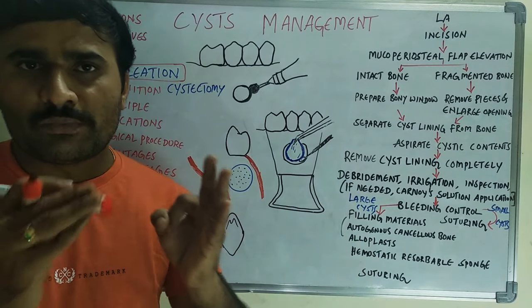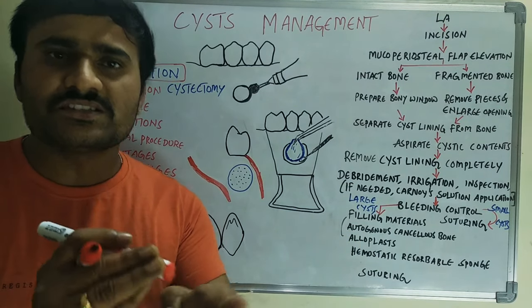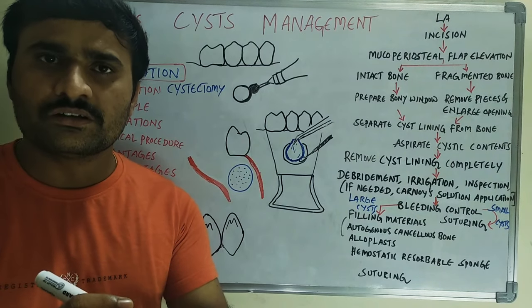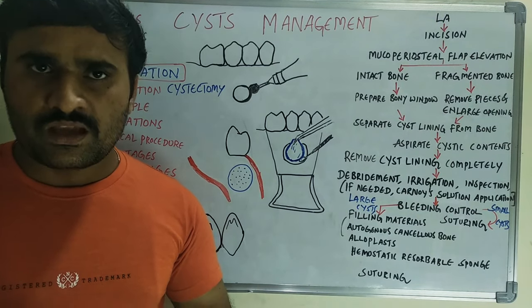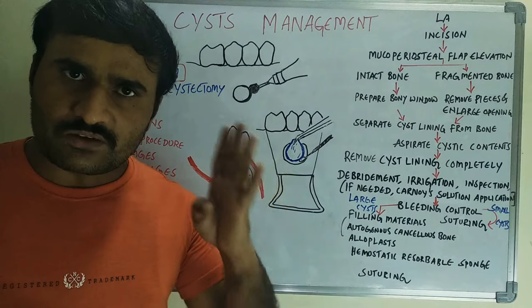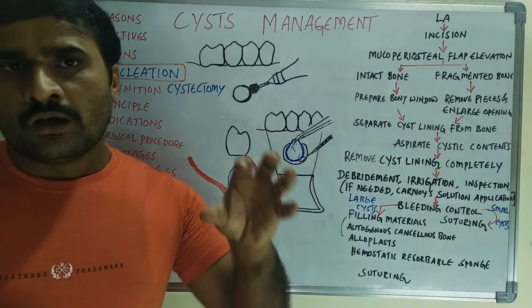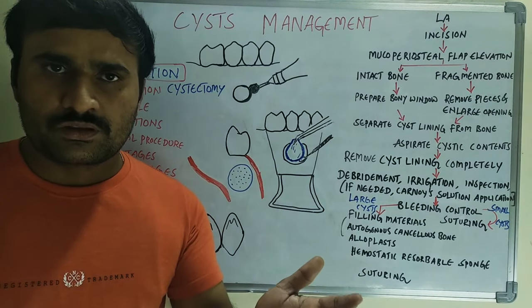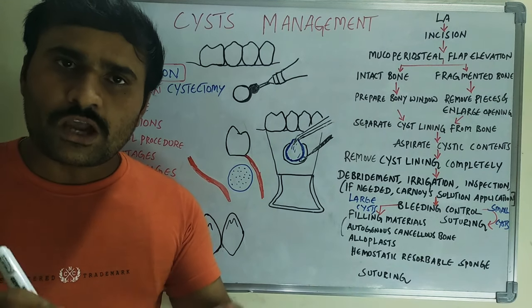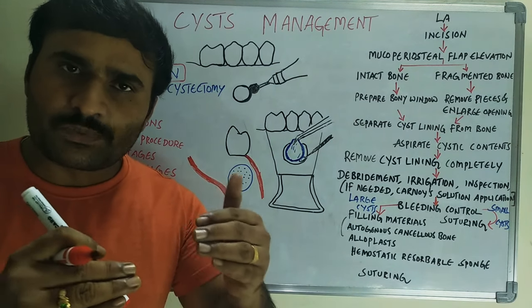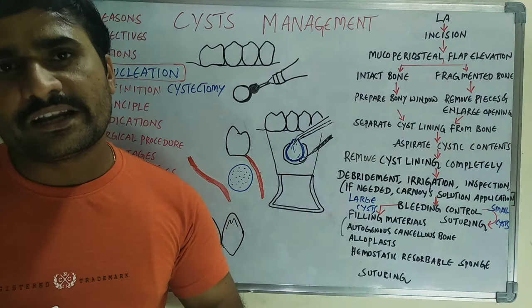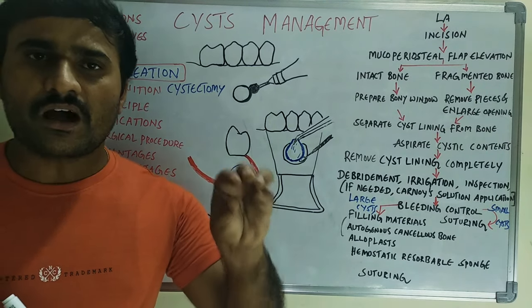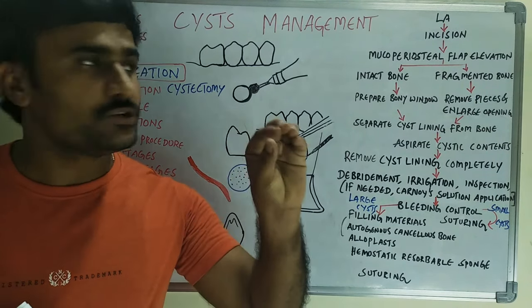We should avoid any trauma to the tooth buds. The third objective is to avoid any pathological fractures, especially in cases of large cysts. The fourth objective is to recontour the bone where possible, and if there is a pathological fracture, we have to reconstruct that area also. These are the objectives when treating the cyst.